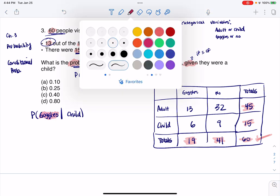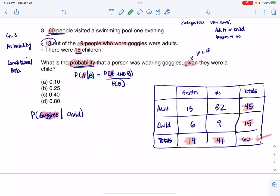And playing the role of B right now is child. Let me swap that formula out with our situation. So we've got P(goggles and child) over P(child). Now let's figure this part out.